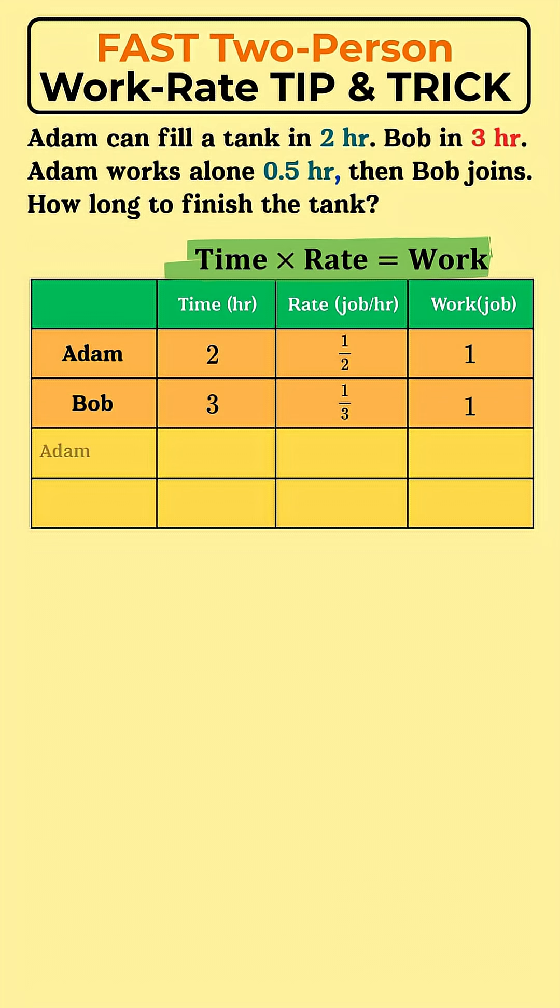Calculate the work done in Phase 1. Adam works alone for half an hour. His work is rate times time: 1 half times 1 half is 1 fourth.